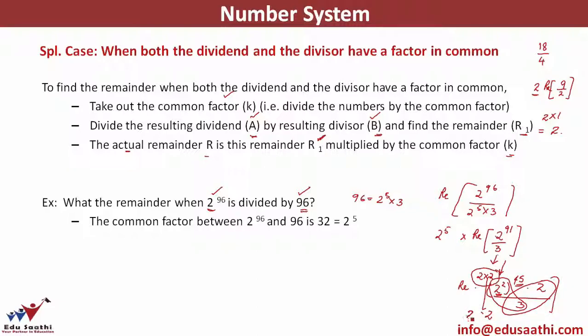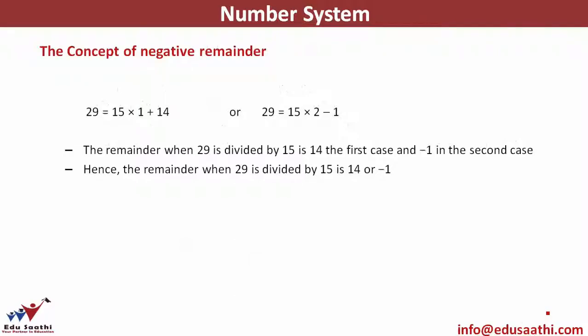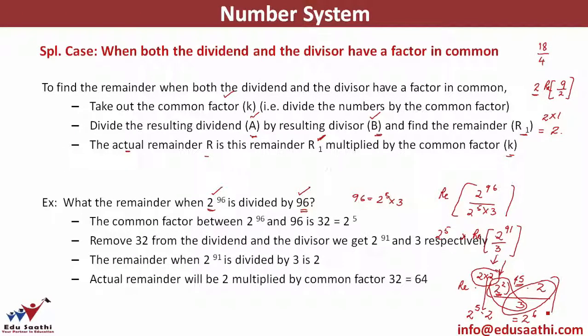This remainder is multiplied by the common factor to give the final answer. The remainder when 2^91 is divided by 3 is 2, which is multiplied by 32 (which is 2^5) to get the final answer of 2^6 or 64.